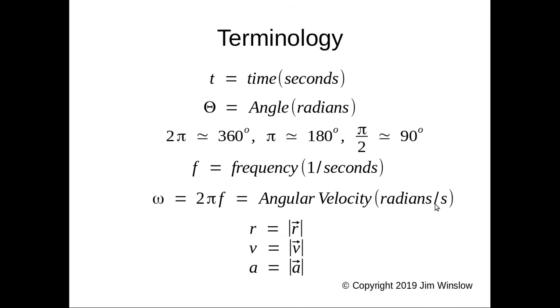Now we have some vector math here and we have three vectors r, v, and a. Each vector has magnitude and direction. So for instance, r could be representing a rod pointed in a particular direction. Now these two parallel vertical pipes mean take the magnitude of r.